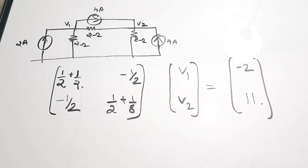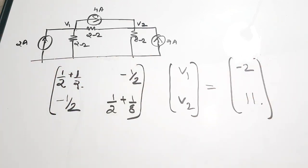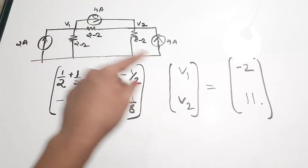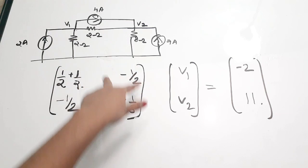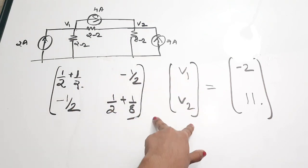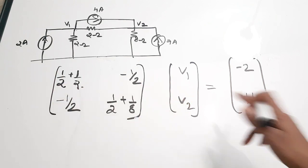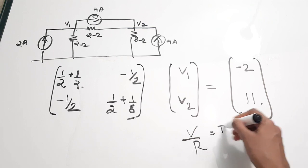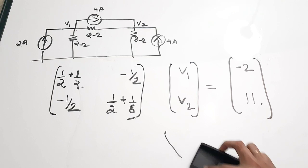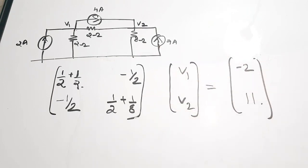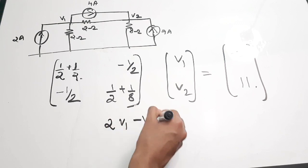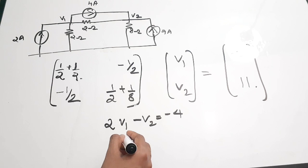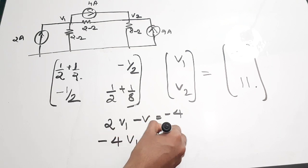The advantage of forming this matrix is that you don't have to mark the current directions for each and every branch. You directly take the resistors on the diagonal, the shared resistors on the off-diagonal, multiply by the voltage vector, and set it equal to the current vector — that is v/r = i. Expanding the matrix multiplication, the equations are: 2v1 − v2 = −4, and the next equation is −4v1 + 5v2 = ...